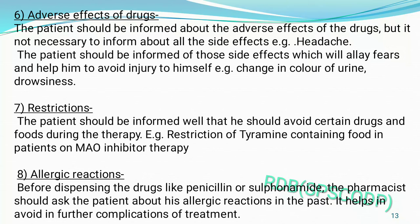The next point is the adverse effects of drug. The patient should be informed about adverse effects, but it is not necessary to inform about all side effects. For example, if there are serious side effects such as change in urine color, vomiting, or nausea, the pharmacist should inform the patient about those.